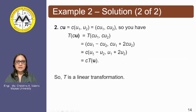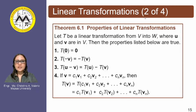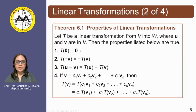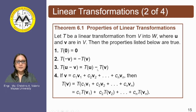Theorem 6.1 gives us the properties of linear transformations. Let T be a linear transformation from vector space V into vector space W, where u and v are vectors in V. The properties are: number one, the transformation of the zero vector is equal to the zero vector. Number two, the transformation of the additive inverse of vector v is equivalent to negative times the transformation of v. Number three, the transformation of u minus v is equivalent to the transformation of u minus the transformation of v.